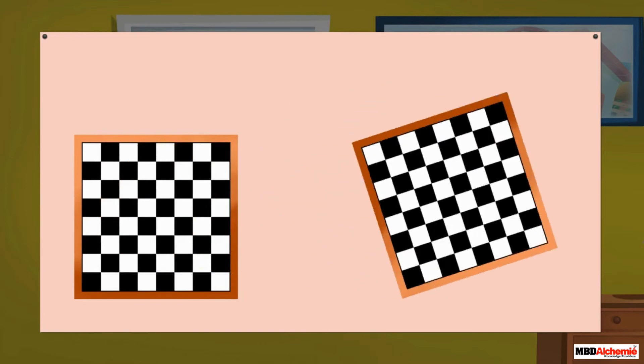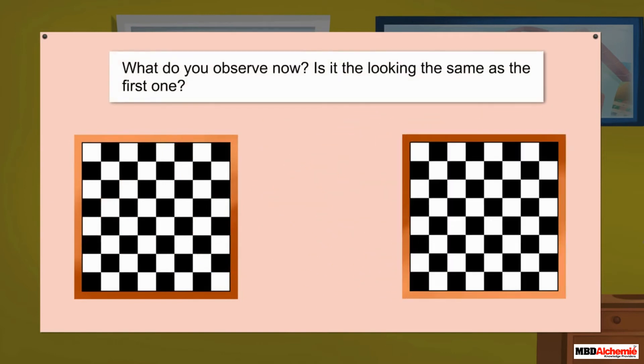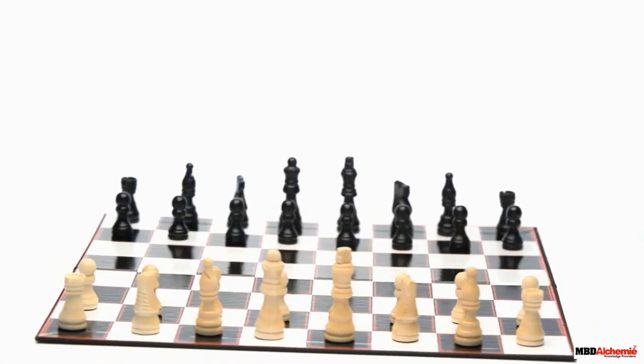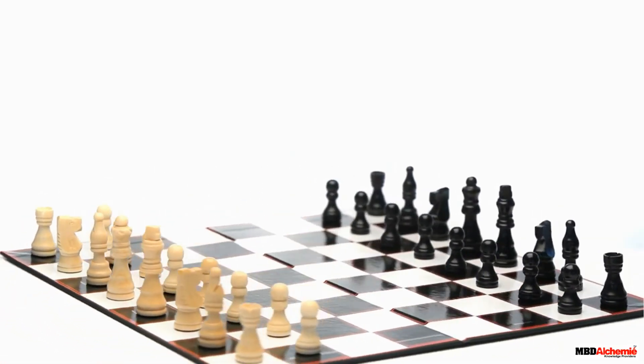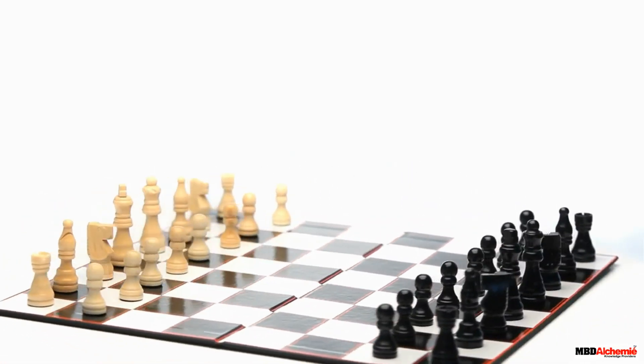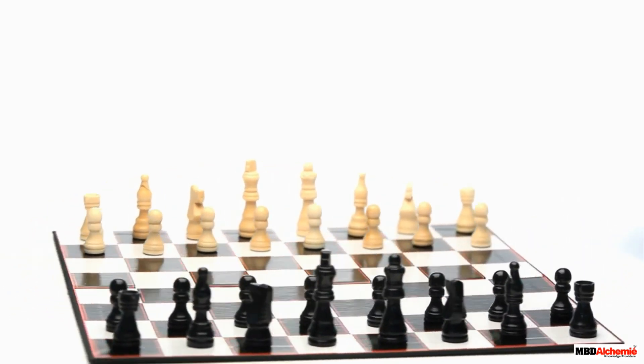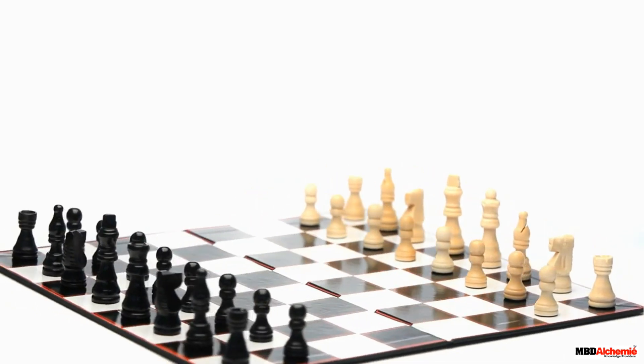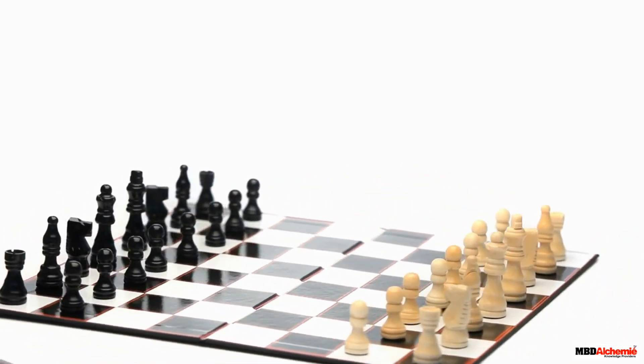Now, let us make a half turn. What do you observe now? Is it looking the same as the first one? Yes. This time, both the chess boards have black square on the left and white on the right. This means the chess board looks the same after a half turn. Or in other words, we can say, the chess board looks the same from opposite sides.